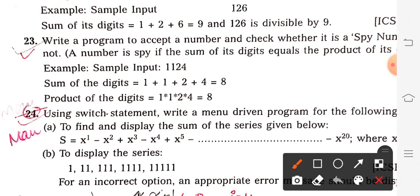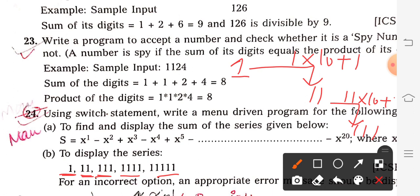The next series is: 1, 11, 111, 1111, 11111. Five terms to display. Look, first term is 1, second term is 11. But how is 11 formed? 1 × 10 + 1, yes you will get 11.